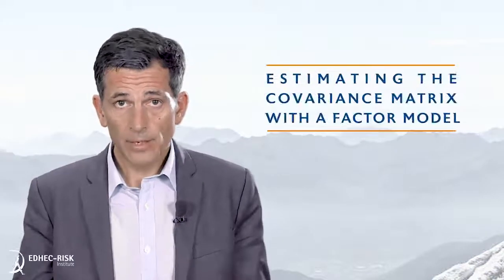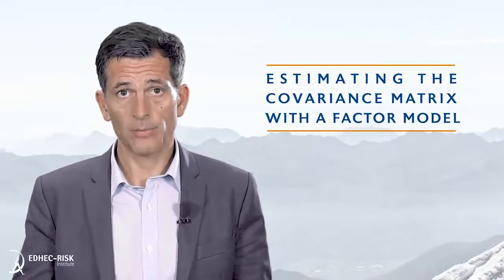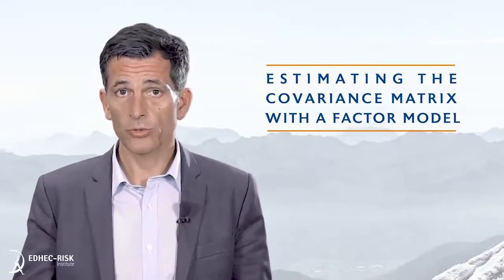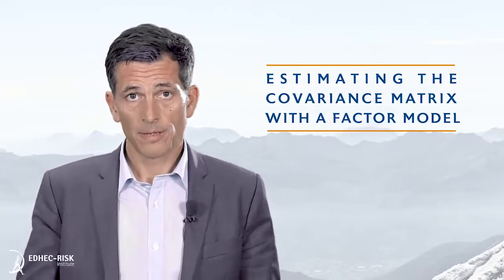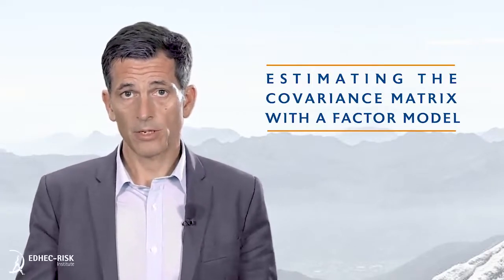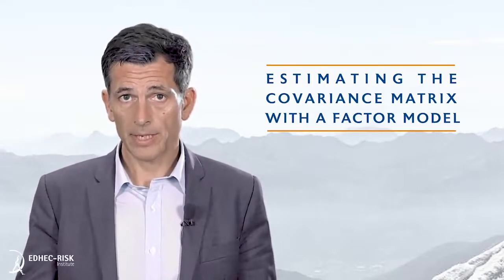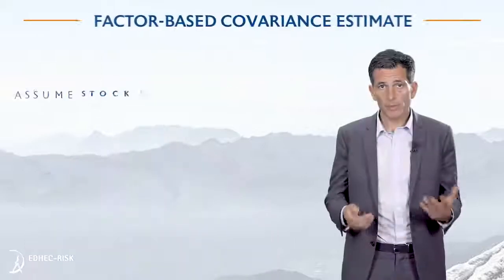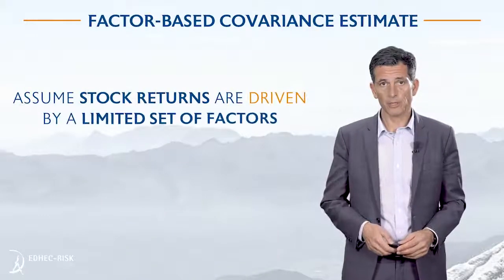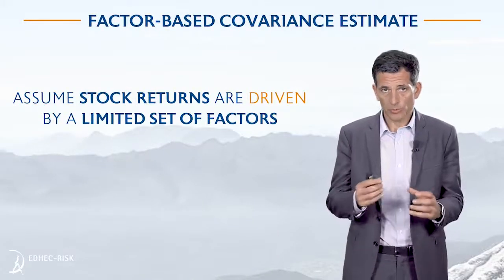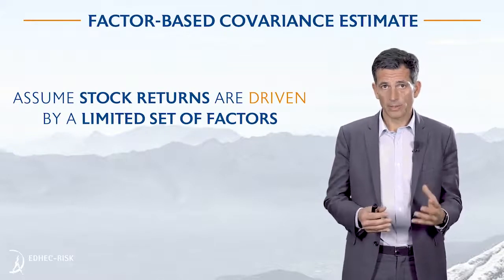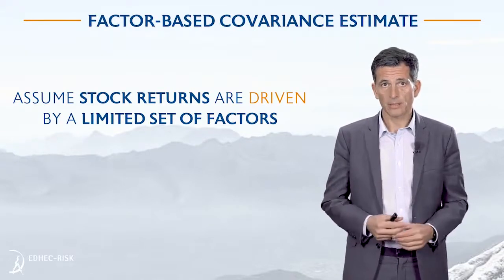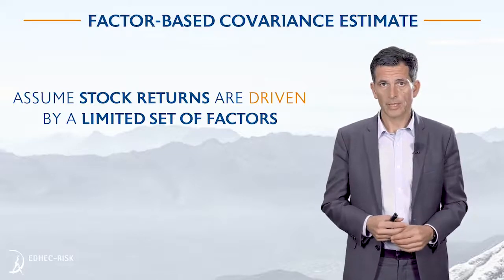Welcome back. Today we are going to talk about how to use factor models to come up with very meaningful estimates for covariance matrix parameters. Remember that we are facing the curse of dimensionality and we need to reduce the number of parameters. It turns out that using a factor model is a very reasonable way to do this.